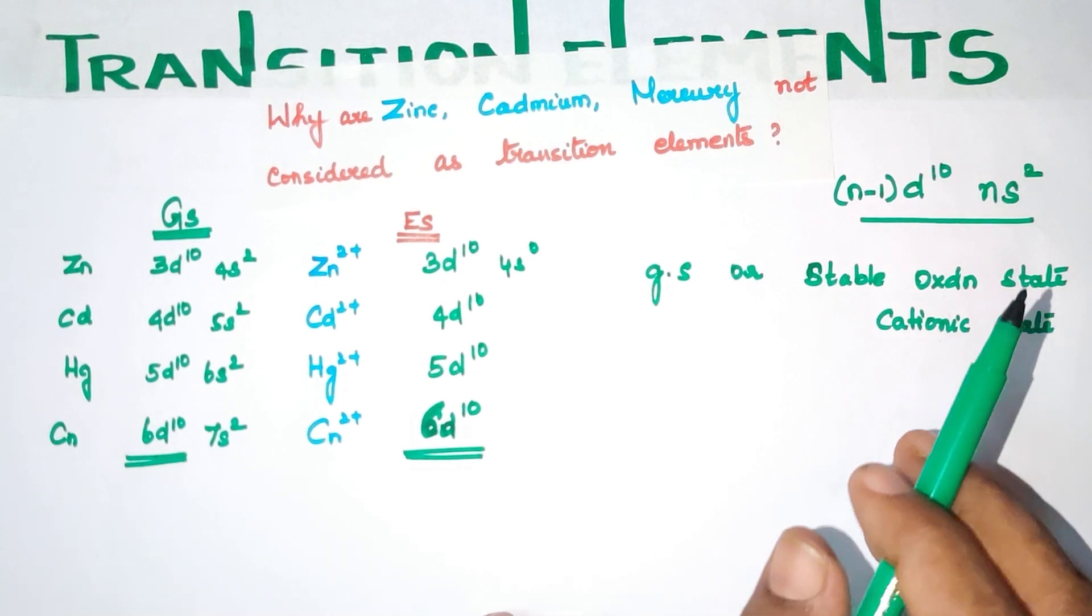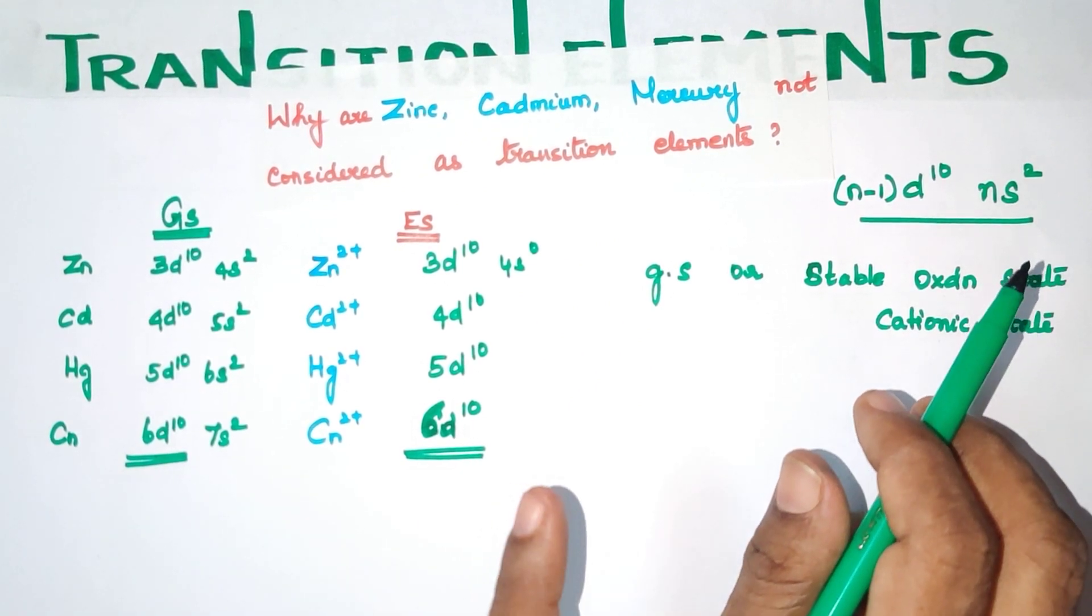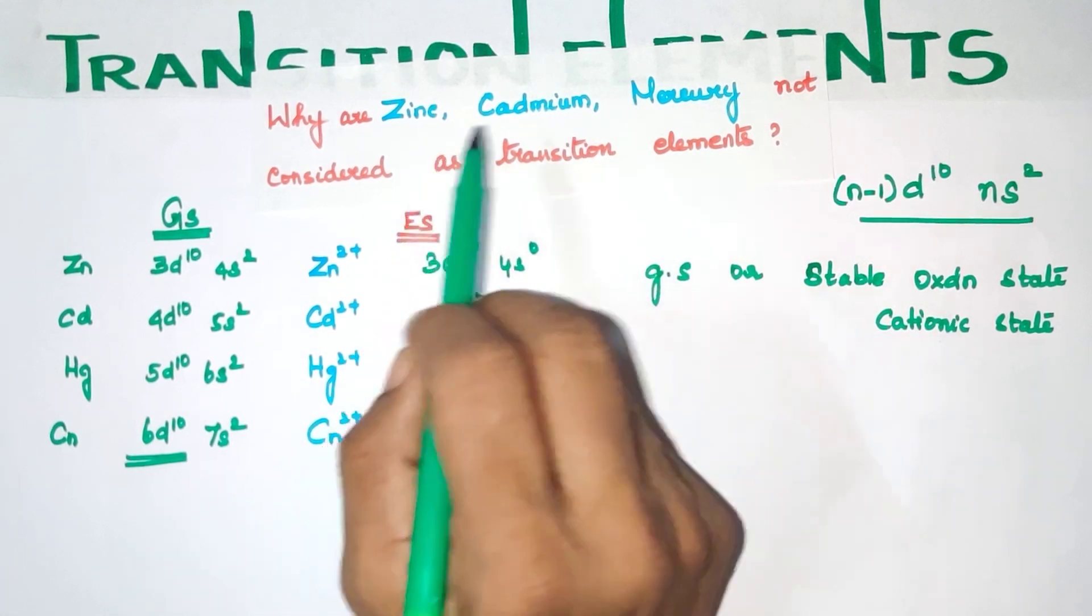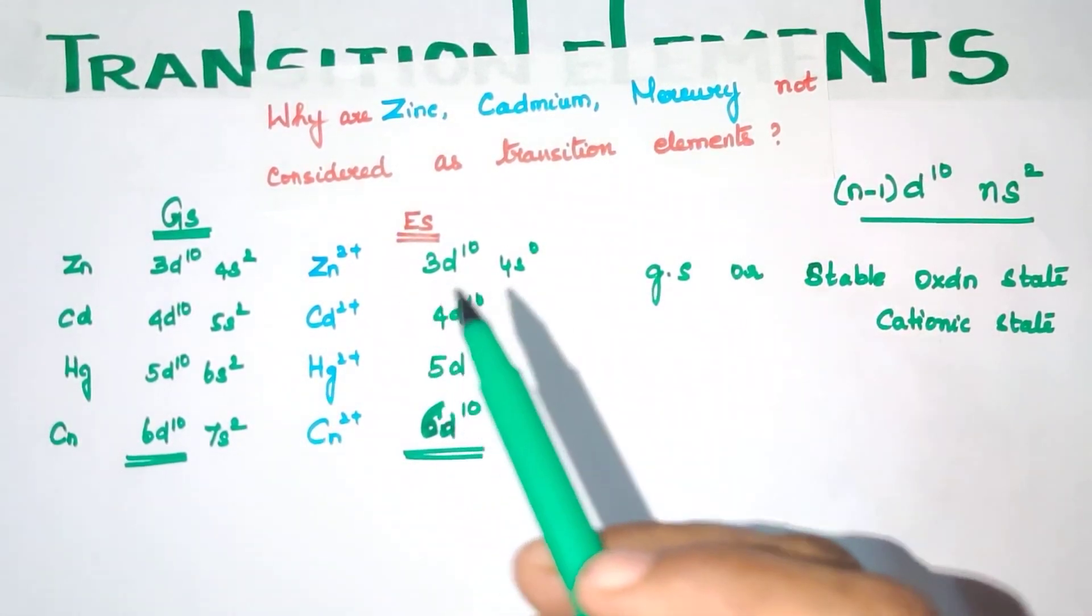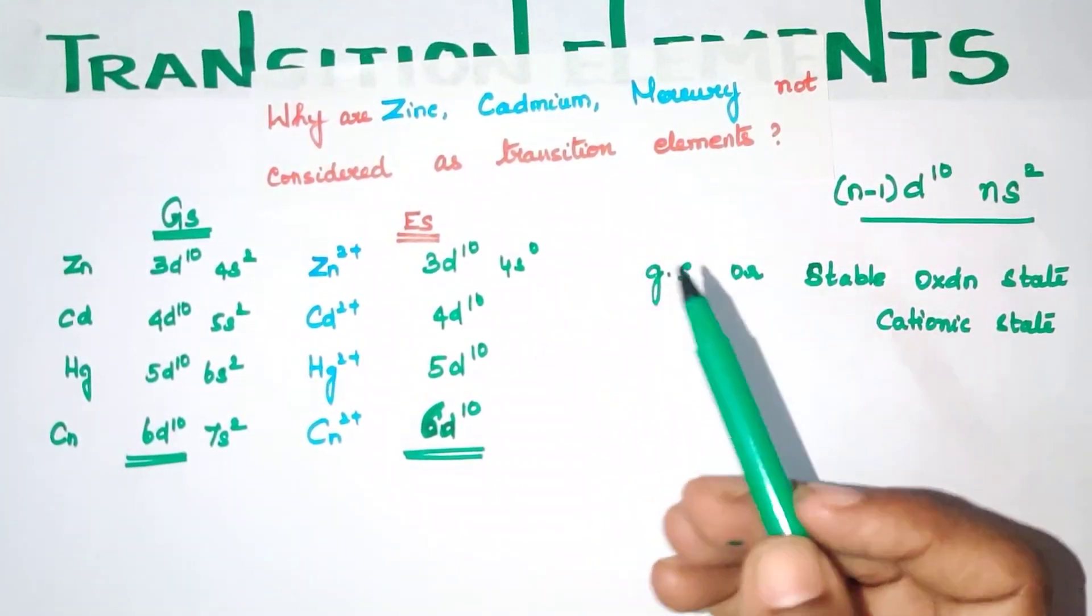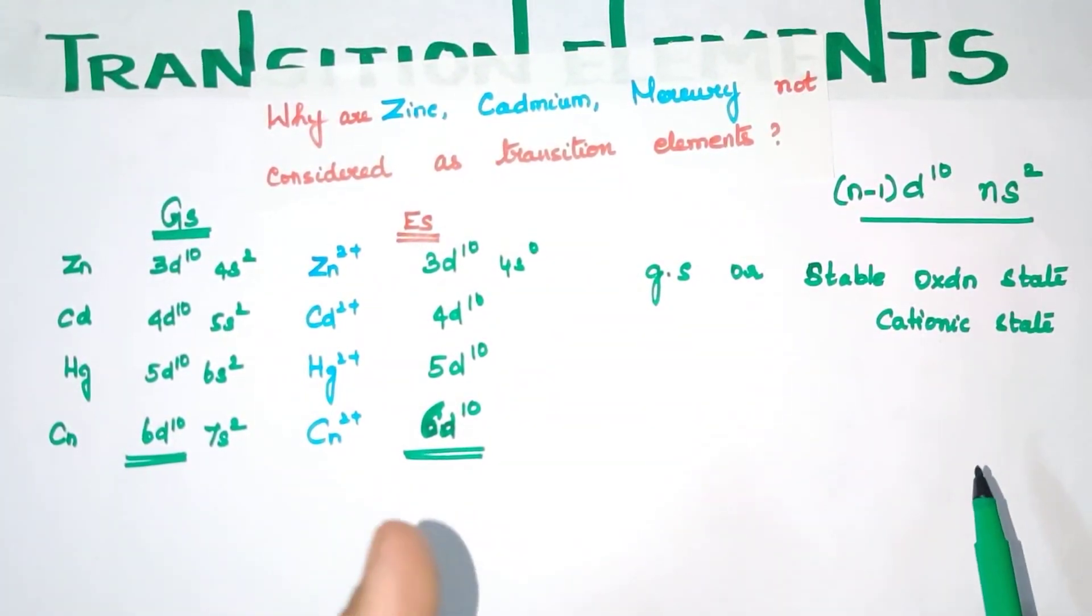So this is how it is explained. In one line you can give the answer: these elements Zinc, Cadmium, Mercury, they do not follow the definition of transition elements given by IUPAC and so they are not considered as transition elements. That is the answer for this question.